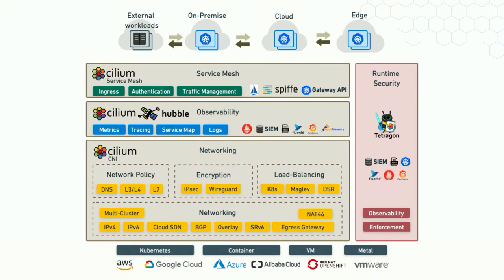We also have egress gateway, BGP, and overlay networking. On top of that is an observability layer with Hubble, giving visibility at Layer 3, 4, and 7 — seeing what service connects to what, return codes, request duration, TCP latency, and so forth. On top of that is Cilium Service Mesh with Gateway API and ingress for traffic management. Cilium can run on any cloud or on-prem: OpenShift, GKE, Anthos uses Cilium under the hood, Azure is adopting Cilium as the default data plane for AKS, and EKS Anywhere uses Cilium by default.